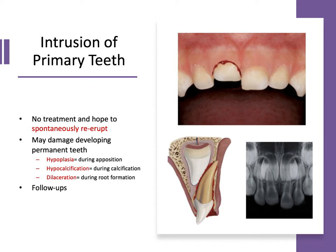Next, we have intrusion of the primary teeth — apical displacement of the tooth into the socket. Primary anterior teeth are typically positioned labial to their permanent successors, so when intruded, they tend to slide against the labial surface. For intrusion of a primary tooth, there's no treatment recommended; we hope they spontaneously re-erupt into a more functional position. This is also true for permanent teeth with open apices — no treatment, and we hope for spontaneous re-eruption.